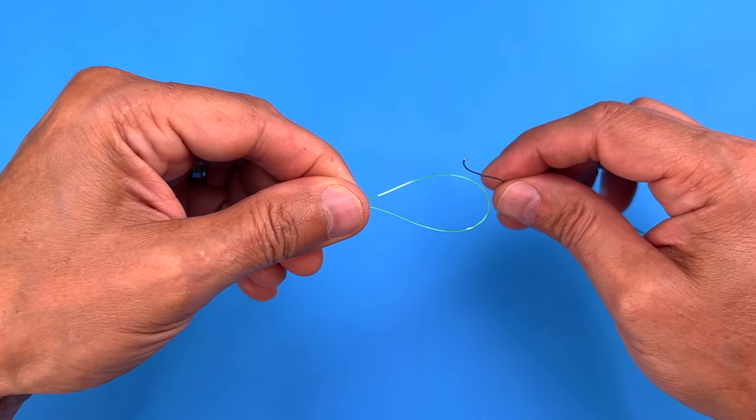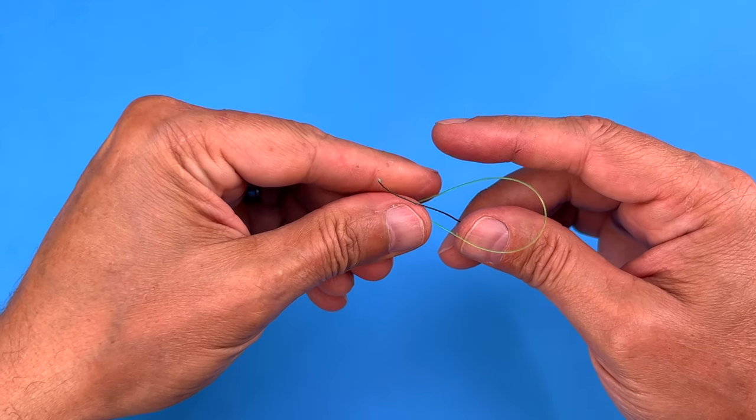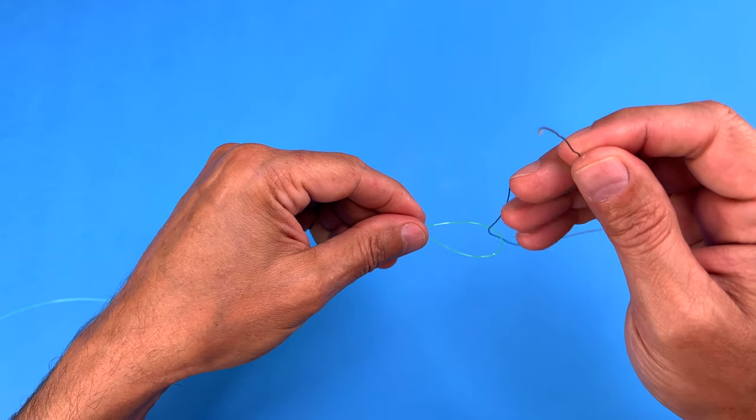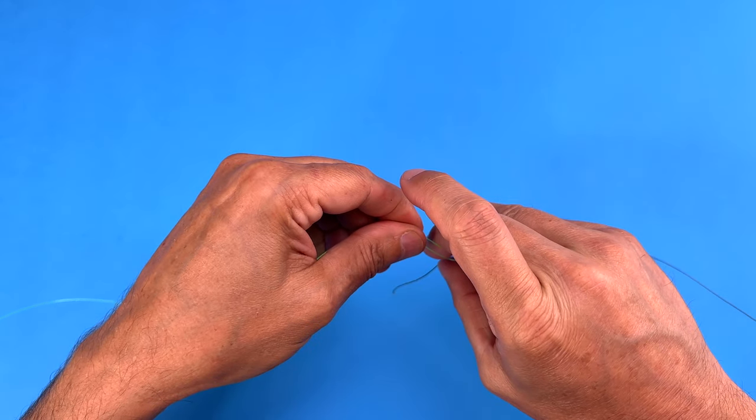You want to take your tag end of your main line and put it up through the loop. Once you get it up through the loop, you're going to wrap it around the loop just like this.